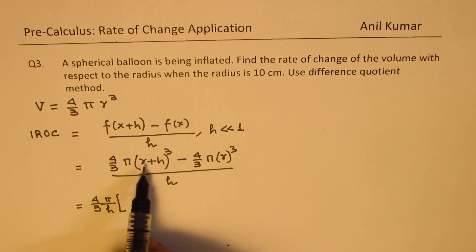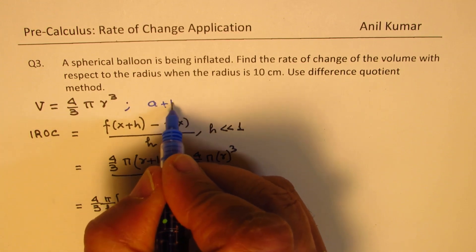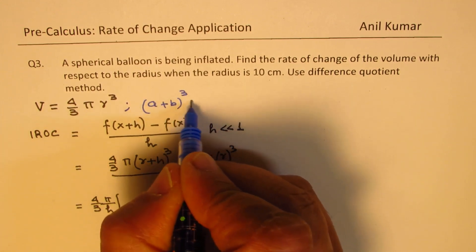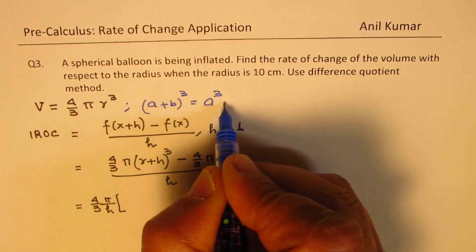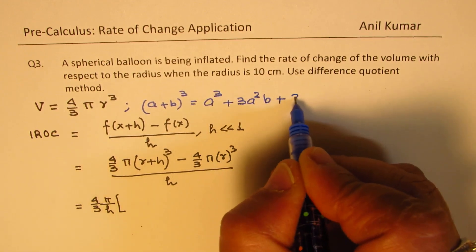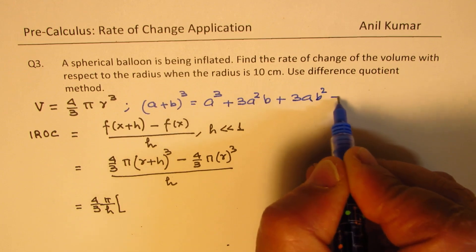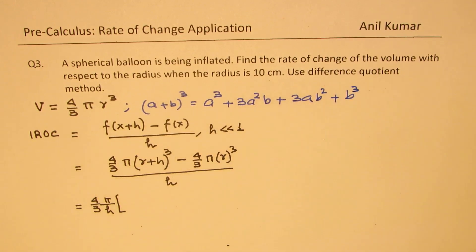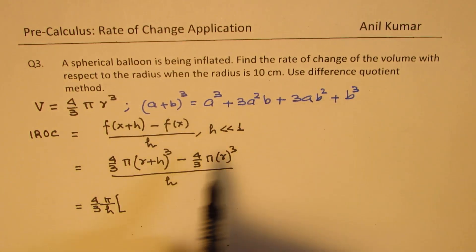Here let us expand r plus h whole cube. You should know this expansion also. A plus b whole cube equals a cube plus 3 a square b plus 3 a b square plus b cube. We're going to use this particular formula to expand.